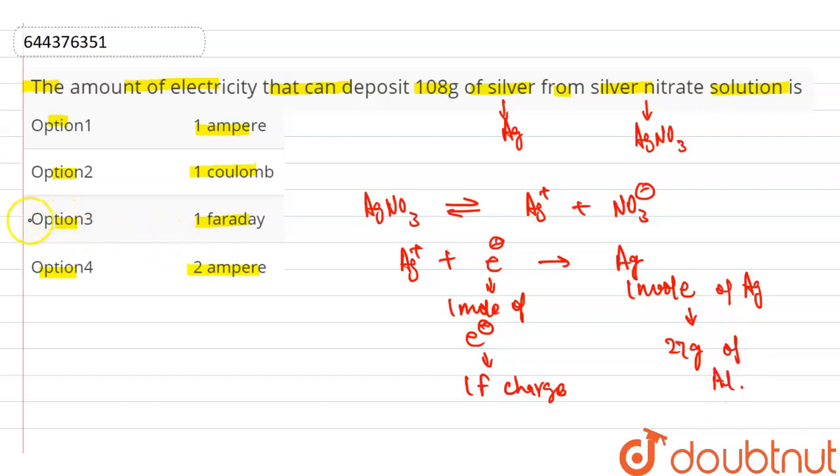So our correct option is option number 3rd, 1 faraday charge. Thank you.